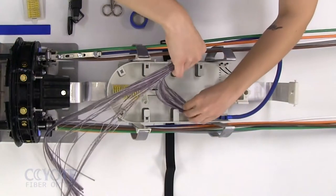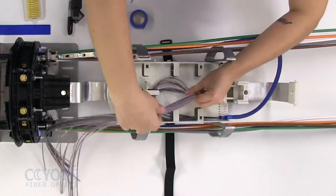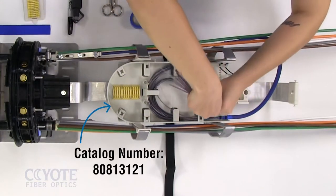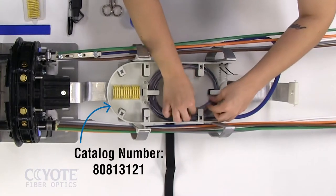Route the fibers to be spliced into the slack storage of the deep profile splice tray. The deep profile splice tray can be used to splice both flat and collapsible ribbon fiber.